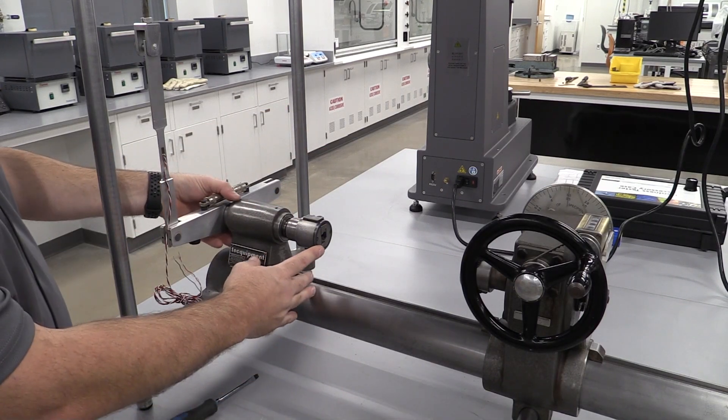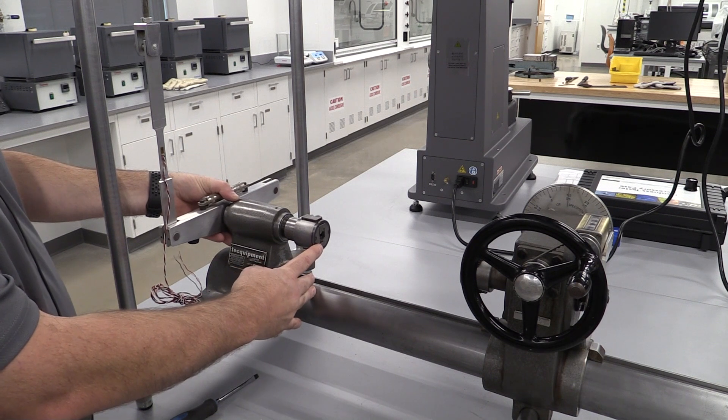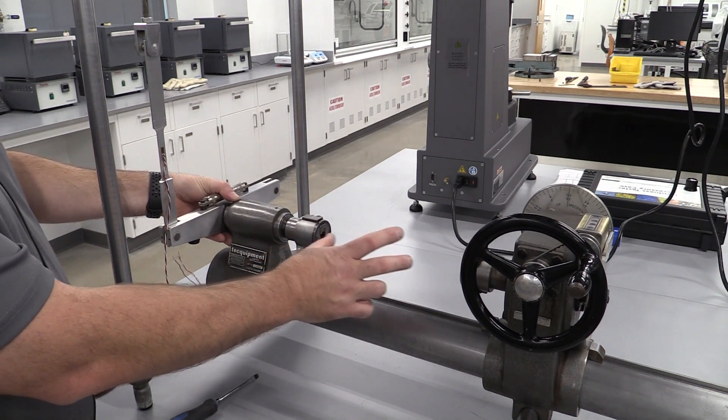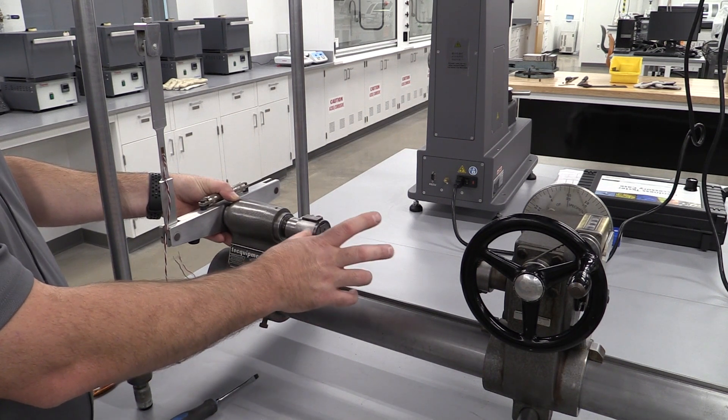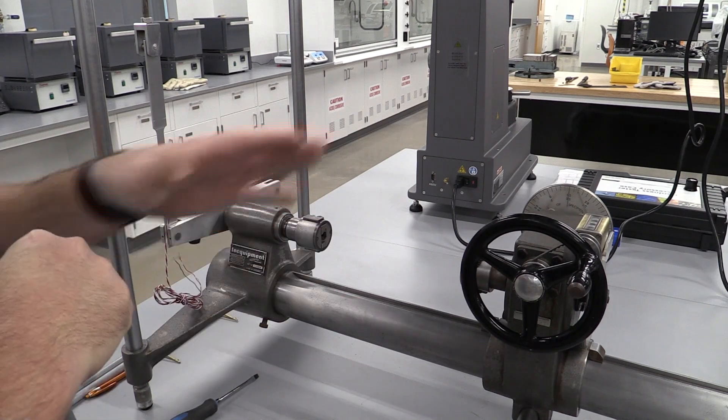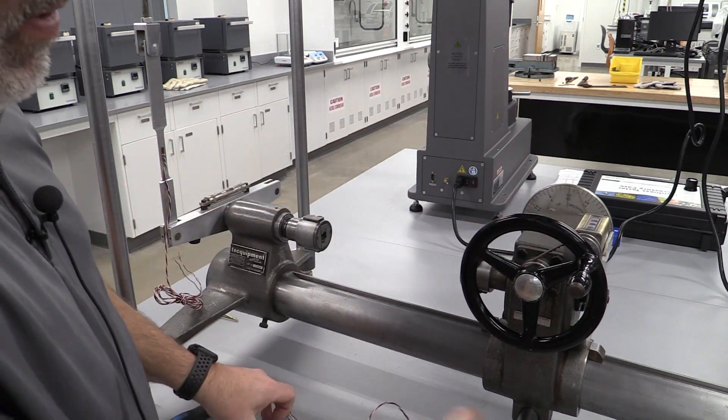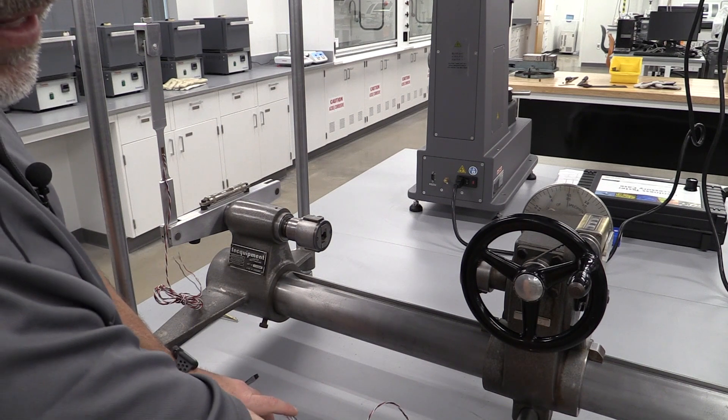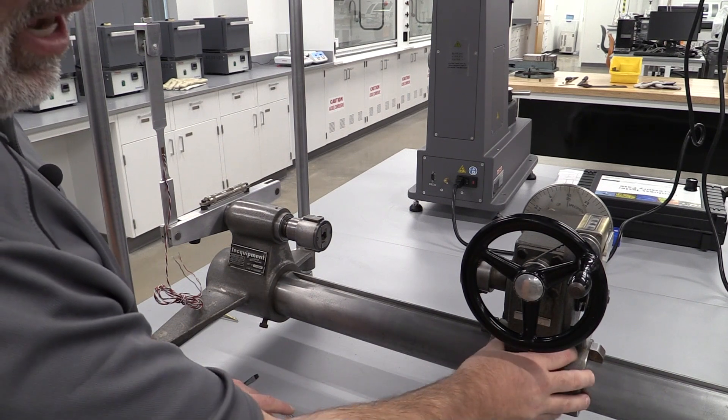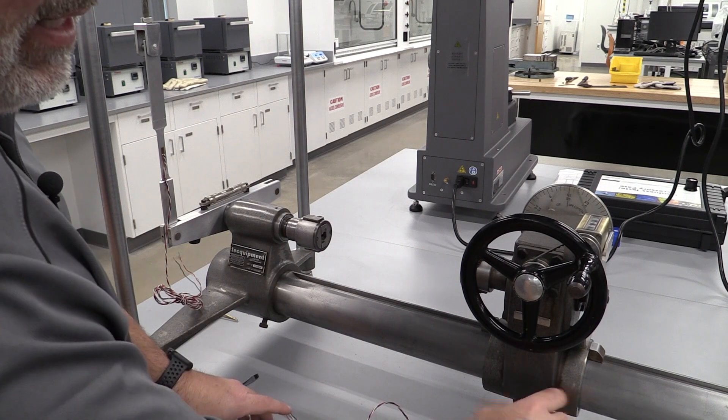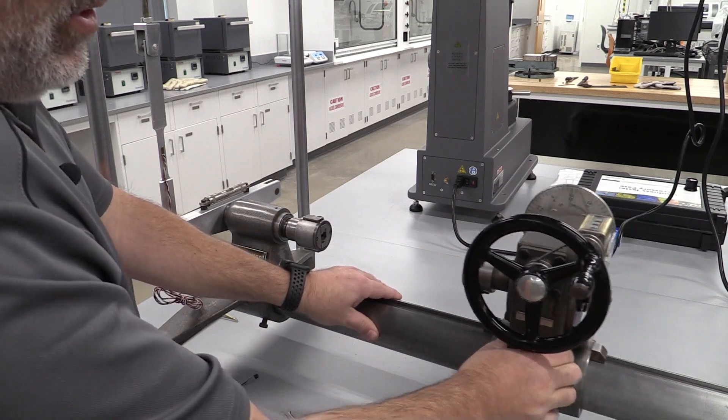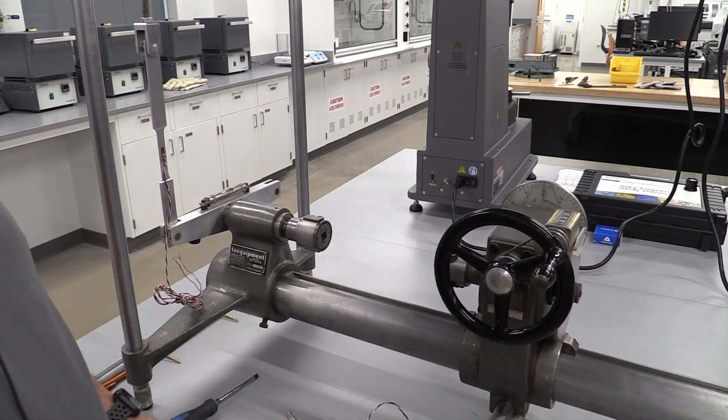The one other movement that this has is it will slide back and forth to allow changes in the length of the part as we put strain on it. On this half the machine over here, we have a lever down here that if you turn it clockwise, it will lock this up and it will not slide. If I unlock that, I can come in here and slide this whole unit as a whole on the machine.